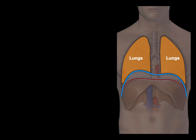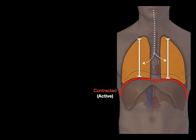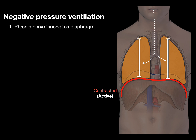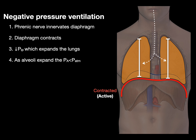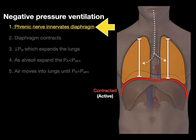During an active state, when the phrenic nerve innervates the diaphragm, the diaphragm contracts and air comes in. When the diaphragm relaxes, air goes out. This is called negative pressure ventilation — when the diaphragm contracts, it reduces intrapleural pressure, which expands the lungs. As the alveoli expand, alveolar pressure becomes less than atmospheric pressure, and air moves in from the atmosphere into the lungs until alveolar and atmospheric pressure equalize. This is negative pressure ventilation, and it all starts with the phrenic nerve innervating the diaphragm — it's the contraction of the diaphragm that causes negative pressure ventilation, which is how we breathe.